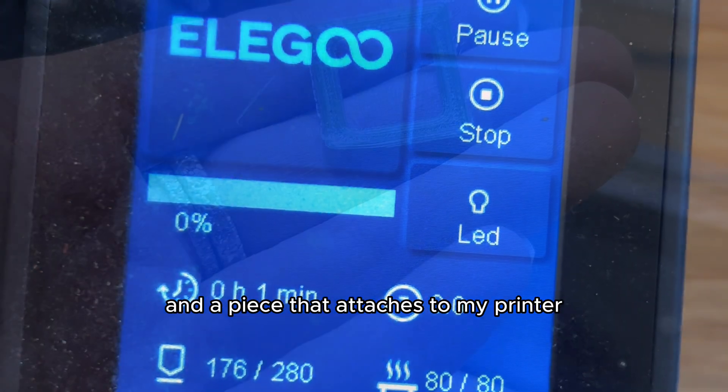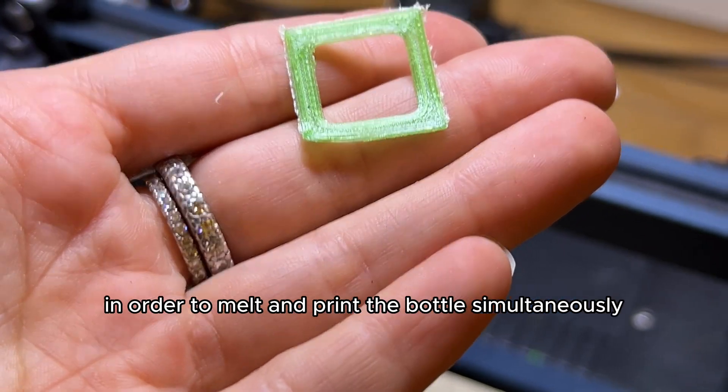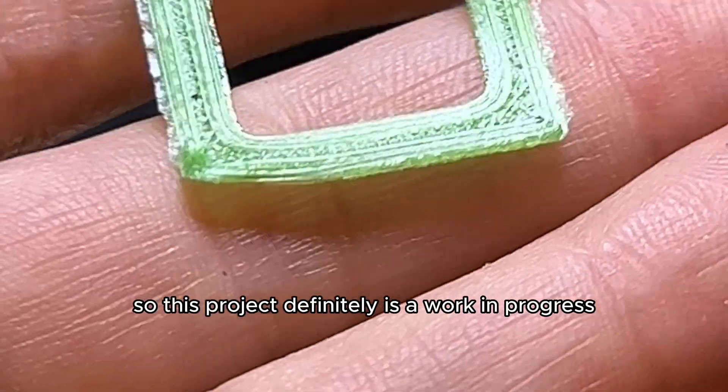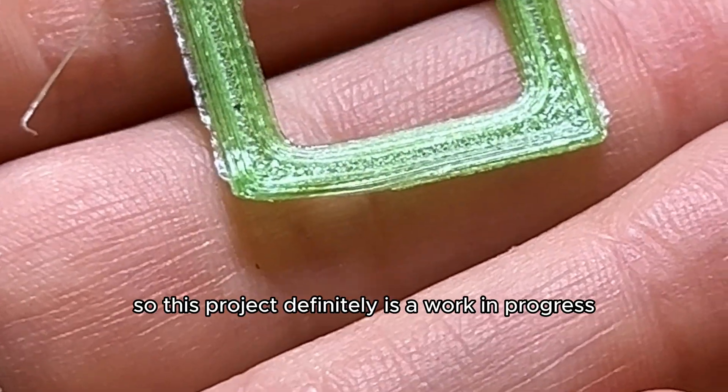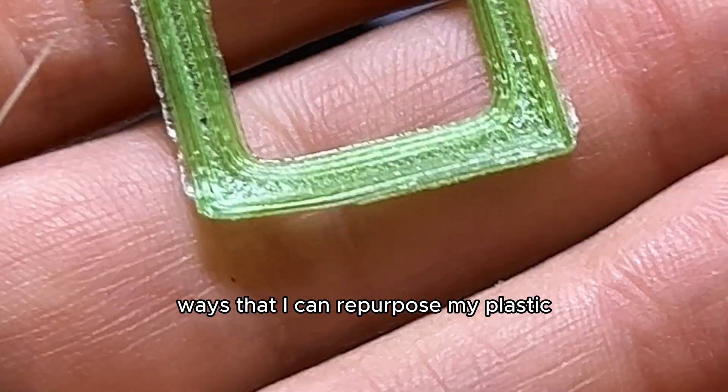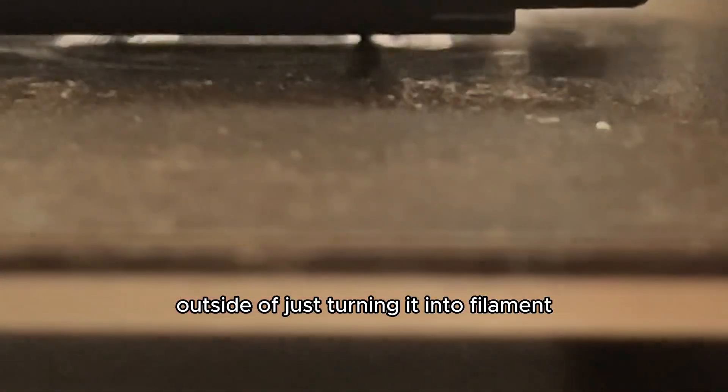So I'll need a new printer and a piece that attaches to my printer in order to melt and print the bottle simultaneously and cut them. This project definitely is a work in progress and I'm still thinking of other ways that I can repurpose my plastic outside of just turning it into filament for my 3D printer. So bear with me as I think of all of these ideas.